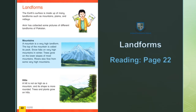A mountain is a very high land form. Pahaad is a very high land form.